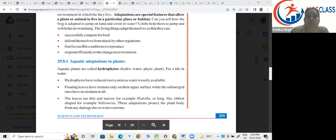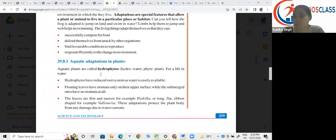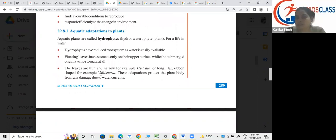First, we are going to do the topic adaptation in case of aquatic plant. Aquatic plant known as hydrophytes. Hydrophytes means the plant which live in water. Hydrophytes will have reduced root system because water is easily available. Next, floating leaves have stomata on their upper surface while submerged will have no stomata at all. First of all, please, with your true heart, tell me, do you guys know about stomata?